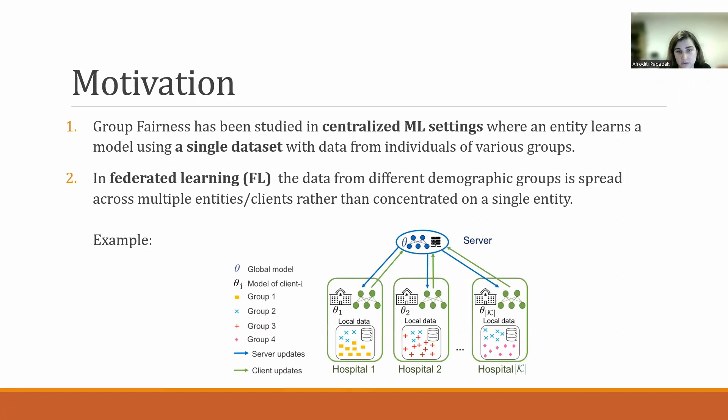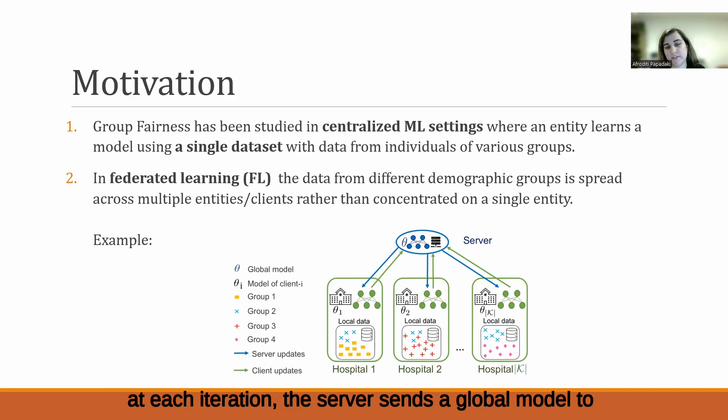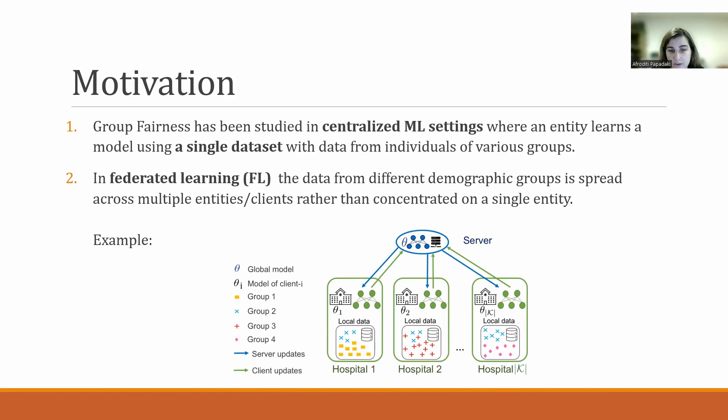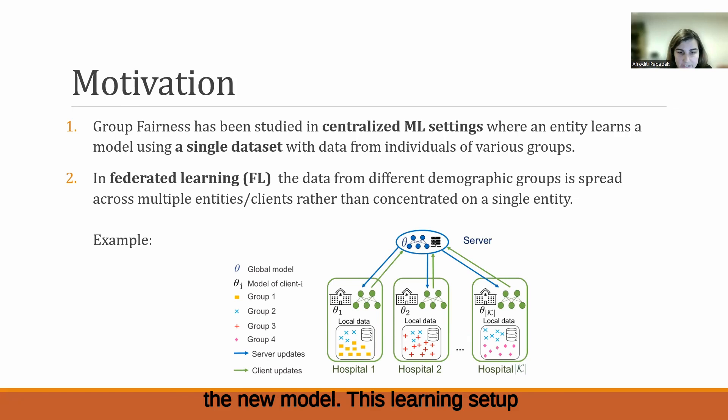This is a common scenario where Federated Learning is deployed. The training process is coordinated by a server that, at each iteration, sends a global model to the clients and receives focused updates from them. These updates are not their own data since they cannot share it, and the server uses the updates to produce the new model. This learning setup allows clients with limited local training data to learn better machine learning models.